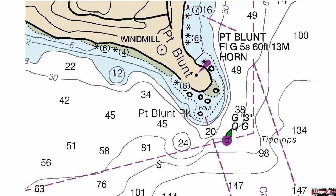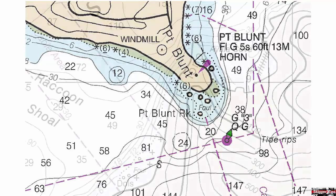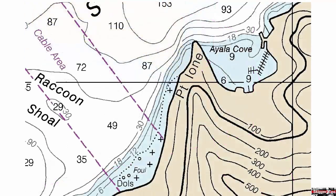Sail clear to avoid extreme danger. Inside the blue shallow water here, you can see plus signs. These represent rocks that are always hidden from view at all stages of the tide.